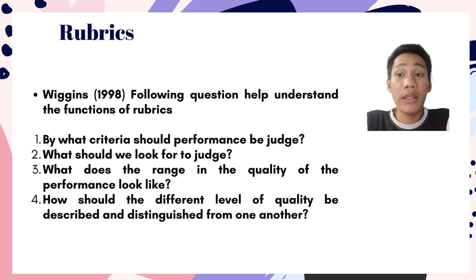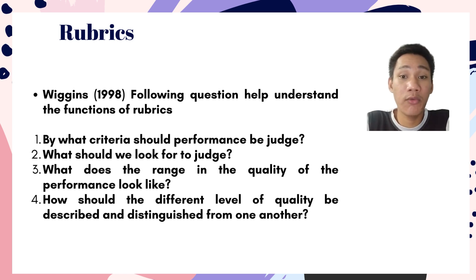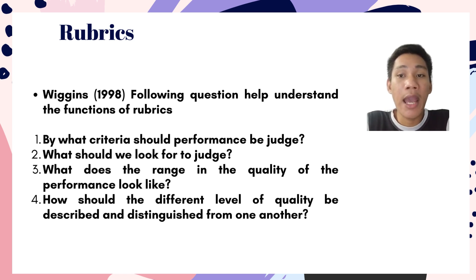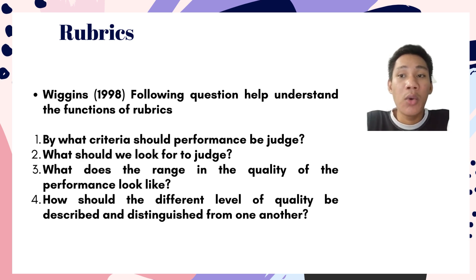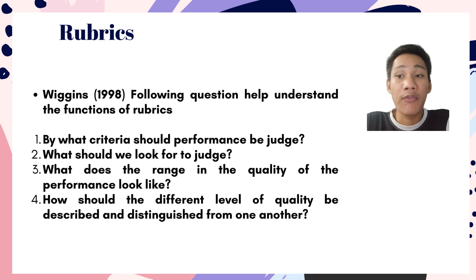The four guide questions are: number one, by what criteria should performance be judged? Number two, what should we look for to judge? Number three, what does the range in the quality of their performance look like? And number four, how should different levels of quality be described and distinguished from one another? With these guide questions, we will be able to create a rubric and determine what specific performance needs to be judged.